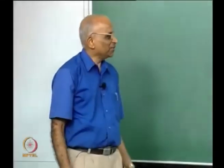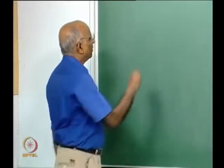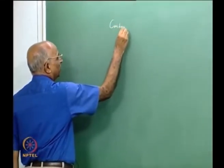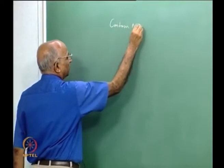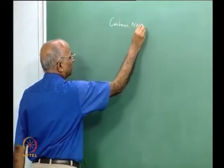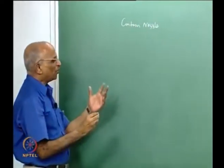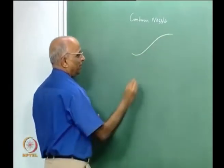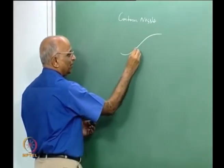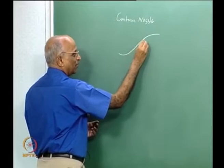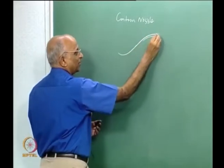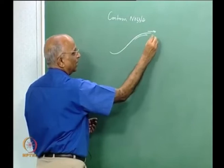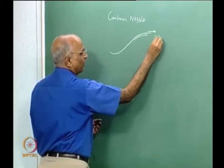Good morning. In the last class, we talked about the contour nozzle. The shape of the contour nozzle is in the form of a bell. Initially, you expand the flow at a larger angle and then compress the flow later on, such that you get a very small value of divergence angle, let us say between 2 to 5 degrees.